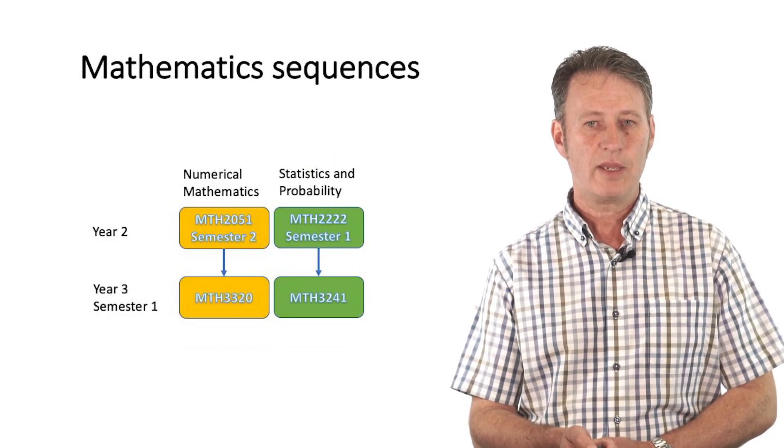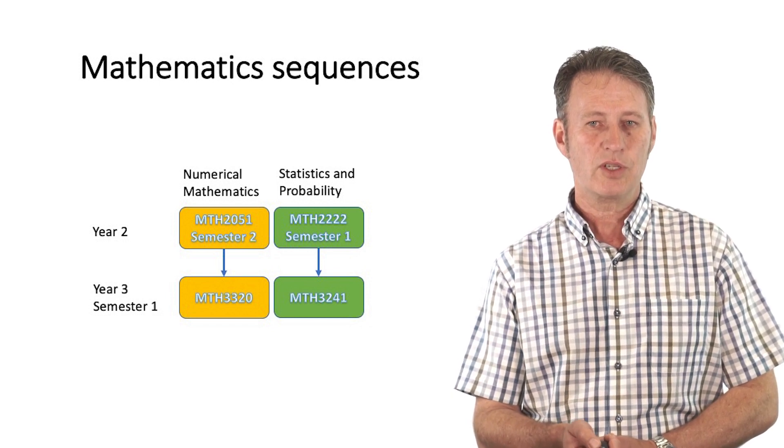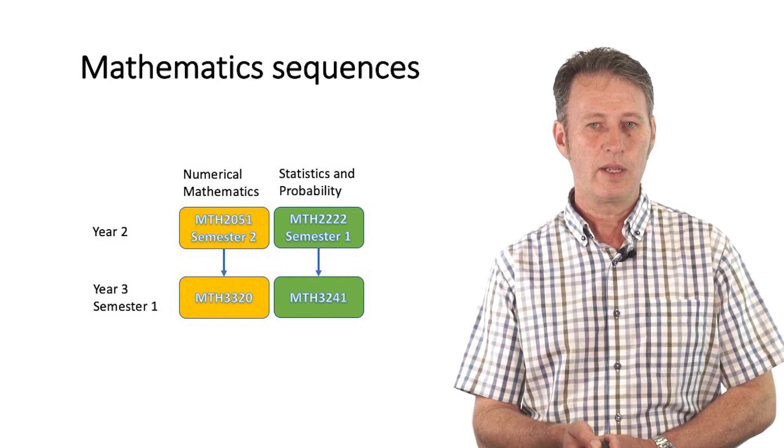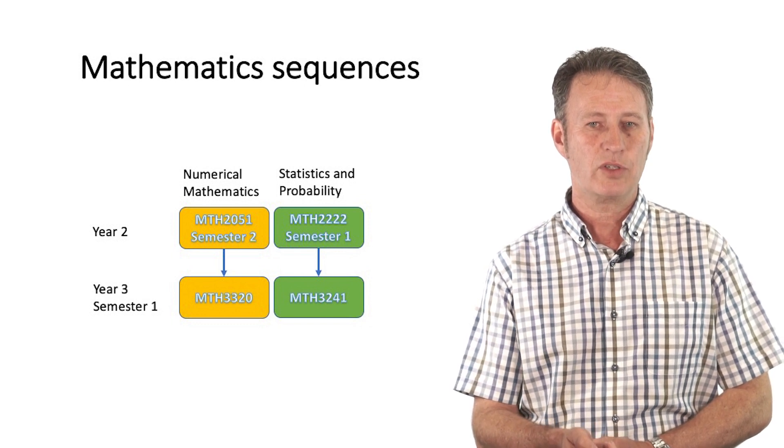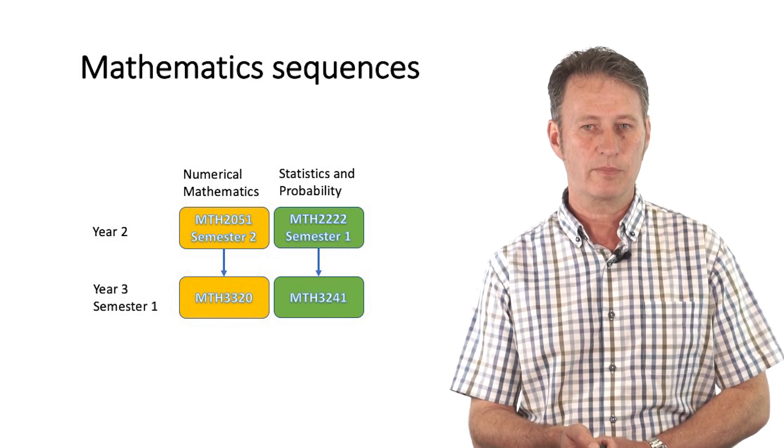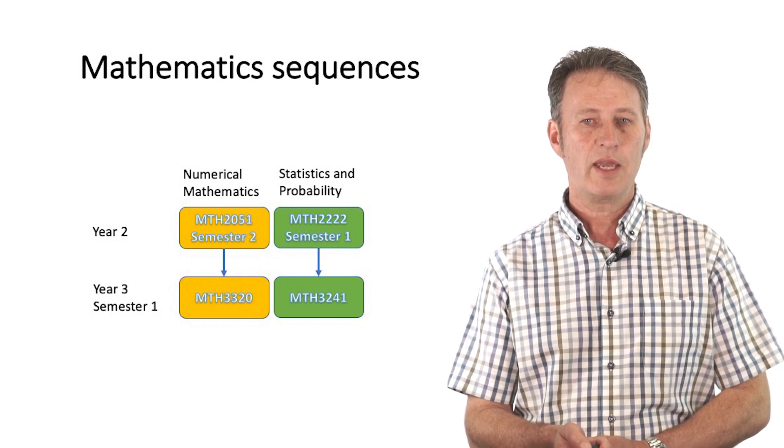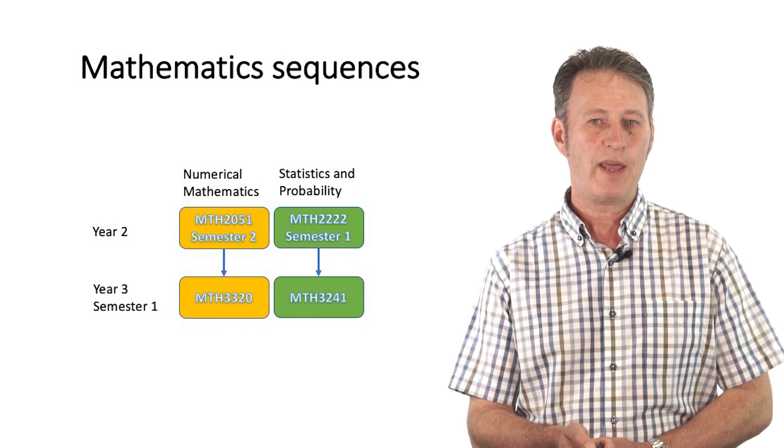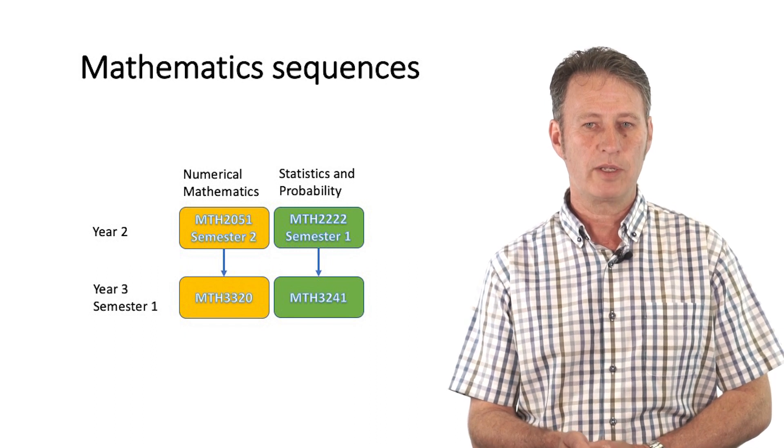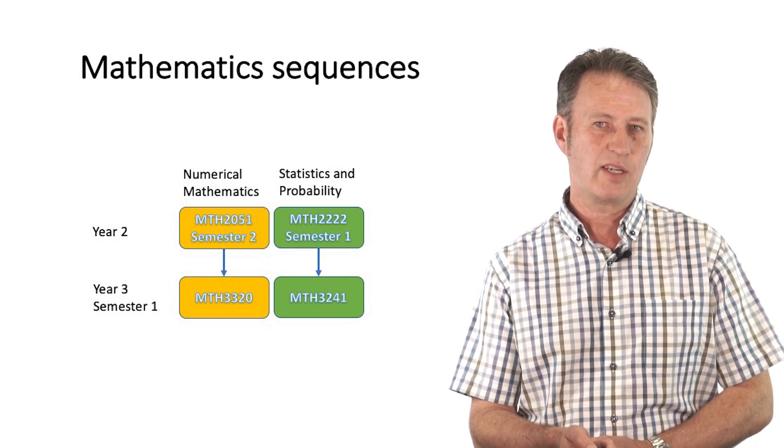The other choice that you will need to make at the end of first year is what higher level sequence to enrol in. If you want to take a sequence in numerical mathematics, then you take MTH 2051, Introduction to Computational Mathematics in your second semester of second year, which then leads on to a third year Computational Linear Algebra unit. If you want to take a sequence in mathematical statistics, you take MTH 2222, Mathematics of Uncertainty in first semester of second year, and that leads on to a third year Statistics and Probability unit. This sequence will require you to juggle the timing of your Applied Studies or elective units.